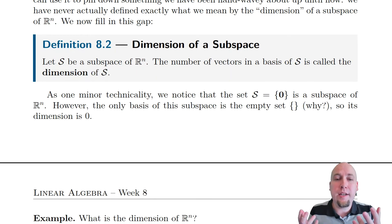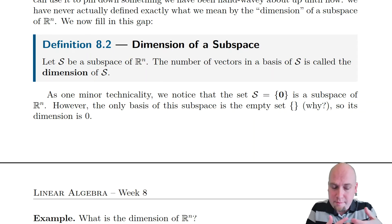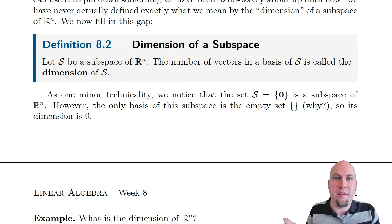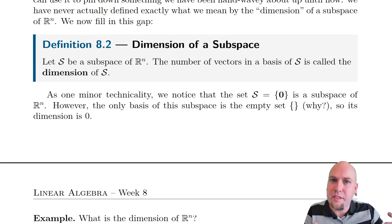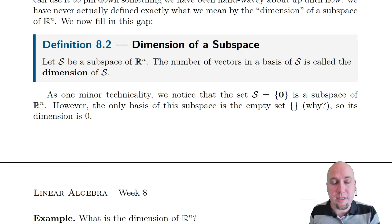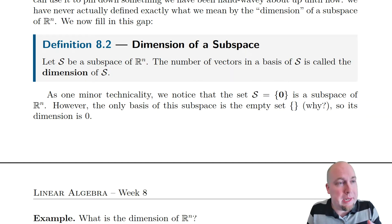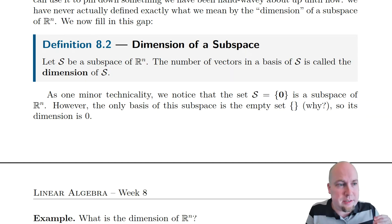The dimension of a subspace is the number of vectors in any of its bases. Because each of its bases has the same number of vectors in it, it doesn't matter which one you choose — this definition actually makes sense. To compute the dimension of a subspace of Rn, you just construct any basis of it and count up how many vectors are in there. That's the dimension.